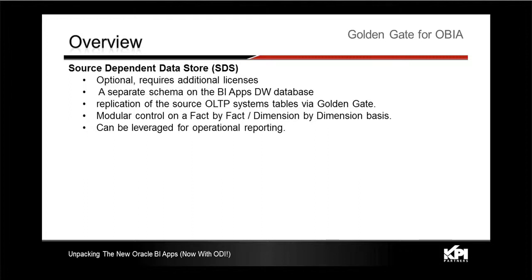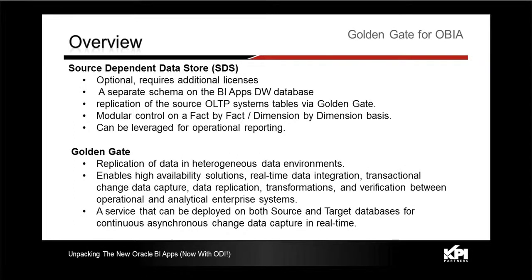This data store gets populated by Golden Gate on a near real-time basis. Golden Gate is a replication tool that helps with updating the Source-Dependent Data Store at a near real-time frequency. It is a service that can be deployed on both source and target databases for continuous asynchronous change data capture (CDC).